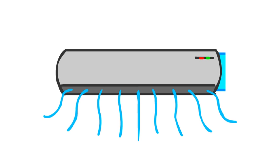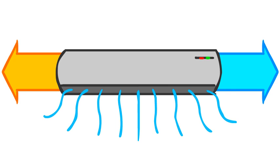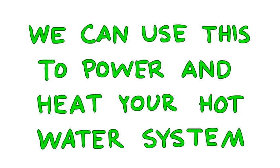When you use air conditioning to cool your home, hot air is pushed out the exhaust unit. We can use this to power and heat your hot water system.